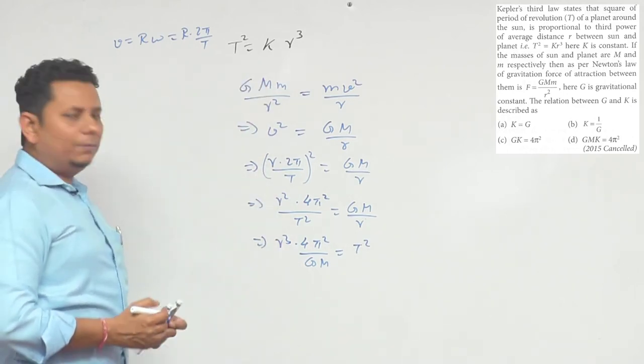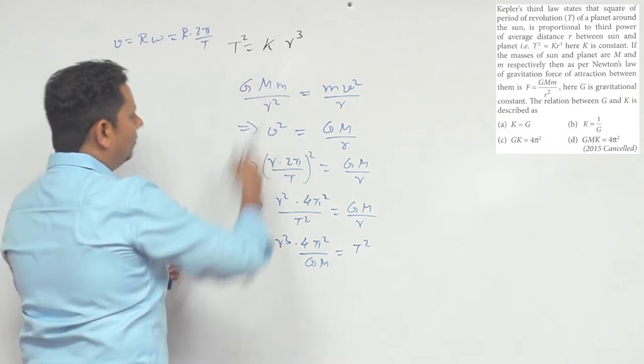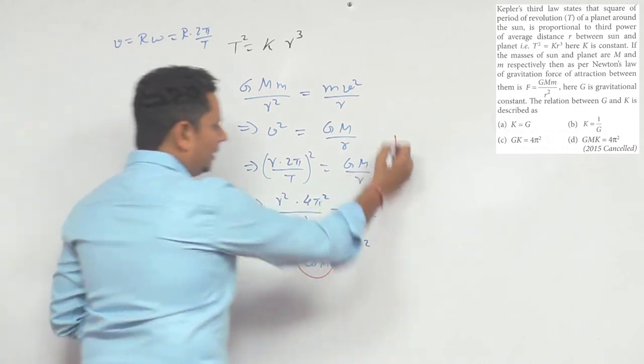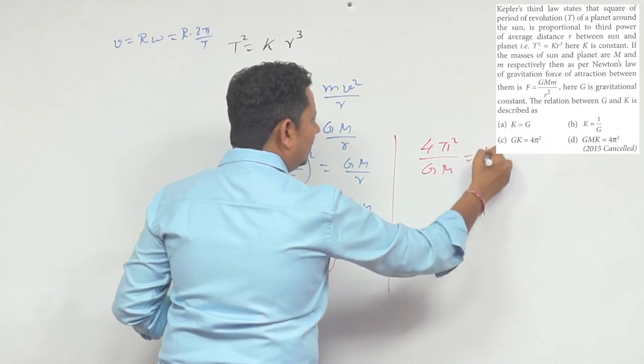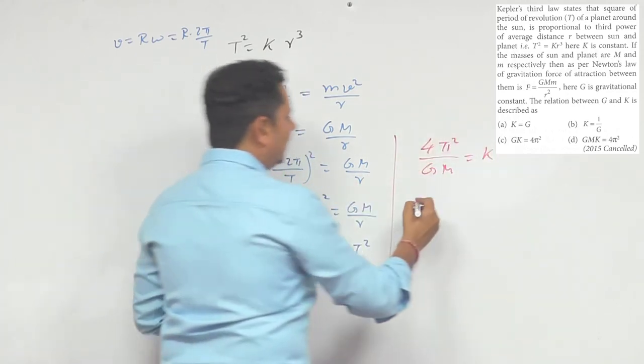Now, isko aur isko agar hum compare karein, so isko compare karke hum keh sakte hain ki jo apna Kepler law ki equation di hui hai, this will be equal to K. So iska matlab ye ho gaya ki 4π²/GM = K. Ab is GM ko agar us taraf le jaaye, to apna final answer aa jaega.